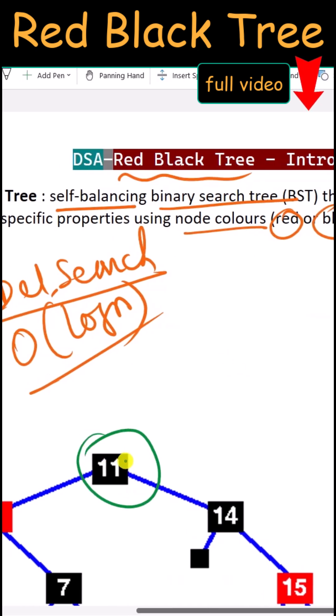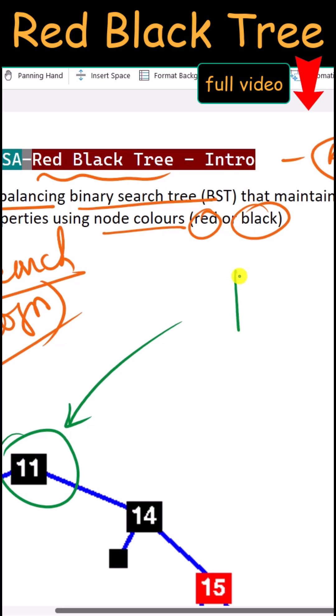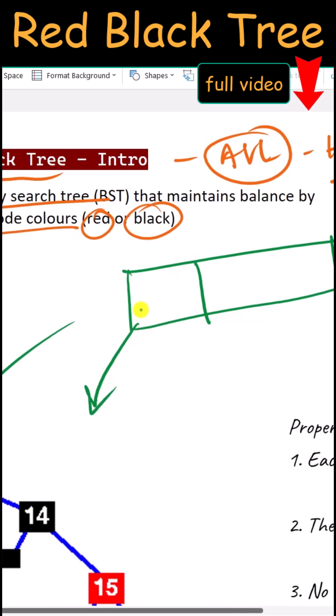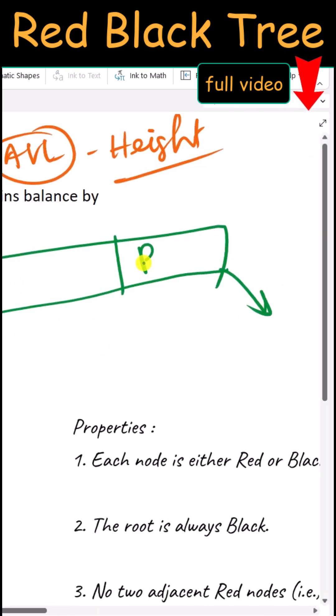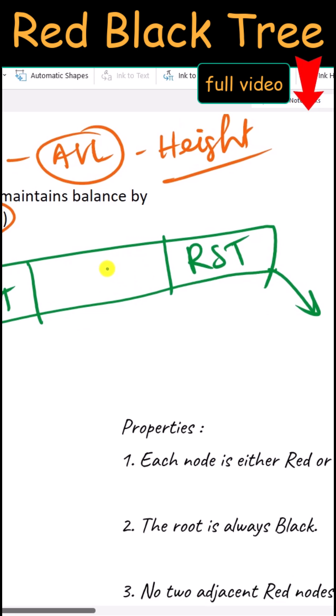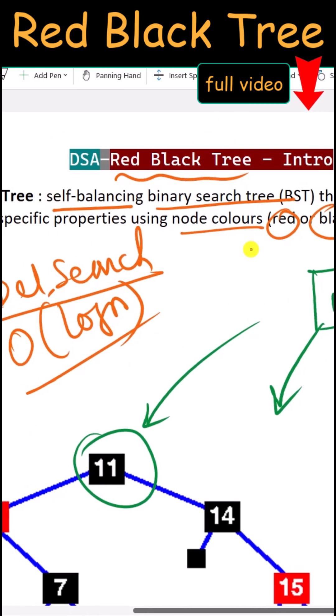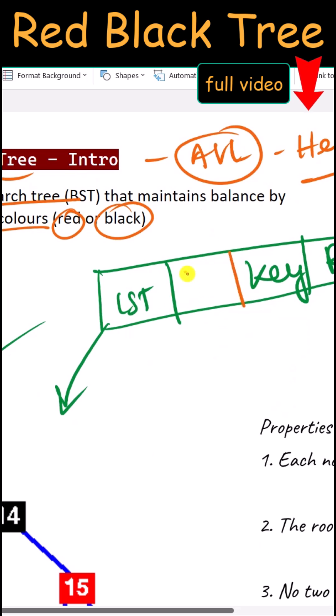Each node will have a pointer to the left subtree and a pointer to the right subtree. It will also contain the key or data of the node. But in the case of the red-black tree, it will also contain the color of the node. It uses a single bit to store the color, either red or black.